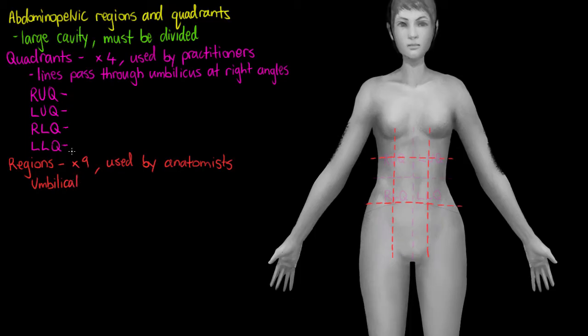The first of these nine divisions or regions is the umbilical region, right in the center here where you would find your belly button. Next we're going to find our epigastric region will be above or more superior to our umbilical region. And below our umbilical or inferior to our umbilical region, we have our hypogastric region which we can also call our pubic region.